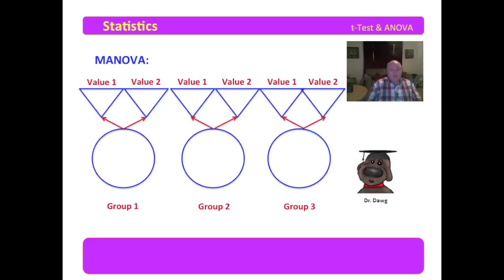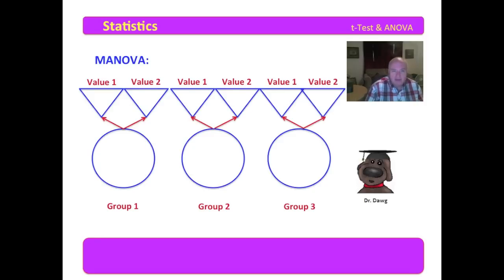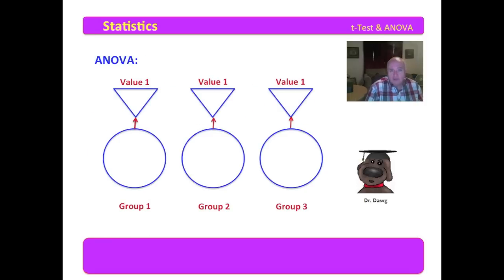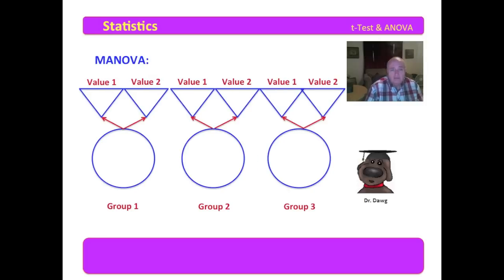Now we move forward to MANOVA. MANOVA can have two or more groups — here I've done three groups. When we do MANOVA, we can look at one or more dependent variables. In this diagram, I have three groups and we're looking at the values of two different dependent variables. ANOVA is a special case of MANOVA: ANOVA is a MANOVA with only one dependent variable.